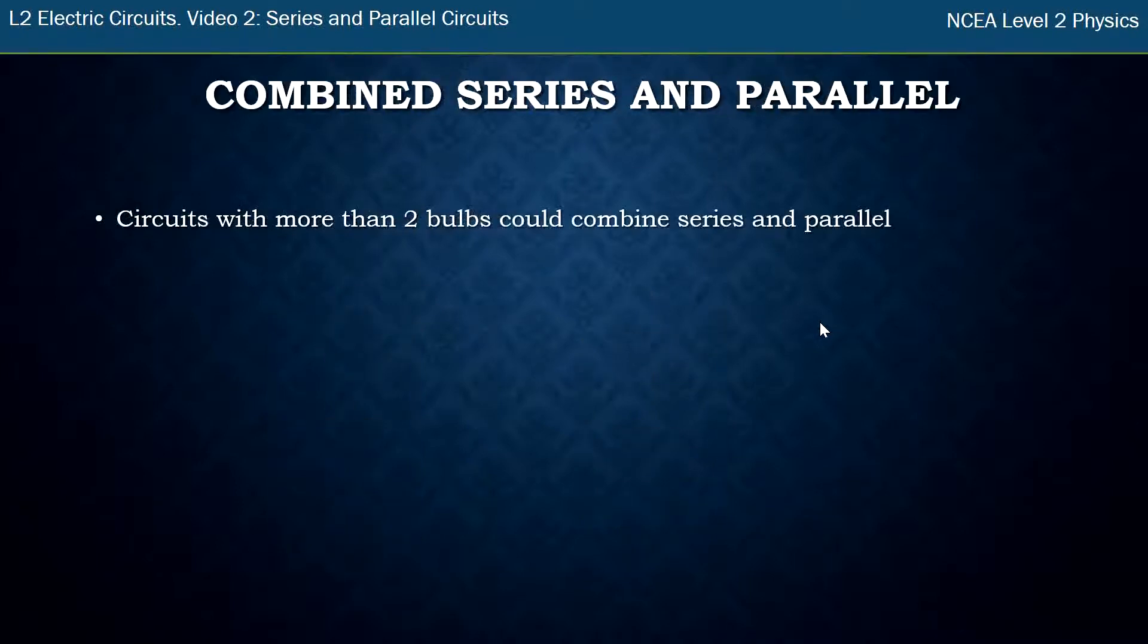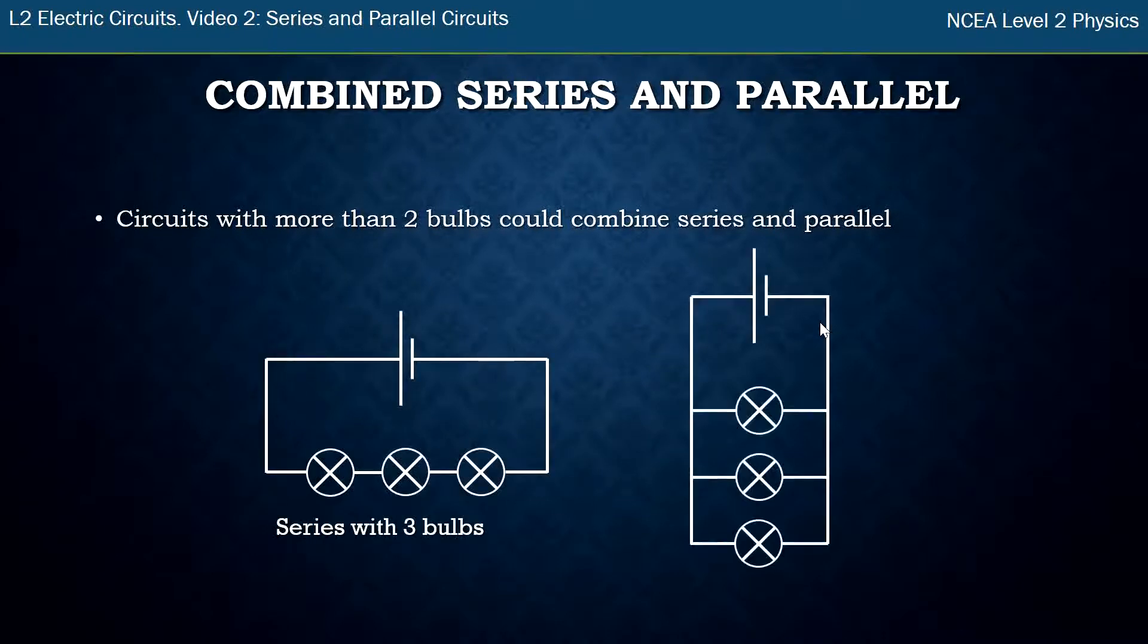Alright, so when we get to more than two bulbs we can combine these ideas of series and parallel. So here's three bulbs in one path, so that's a series circuit. Here's three bulbs and they've each got their own path. That's a parallel and it's got three paths.